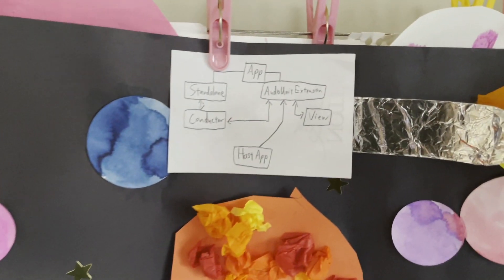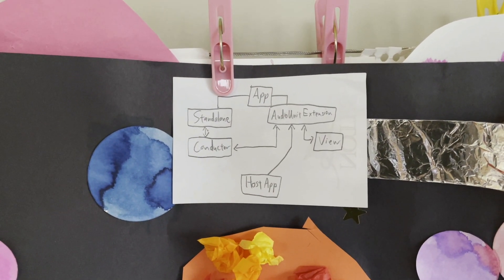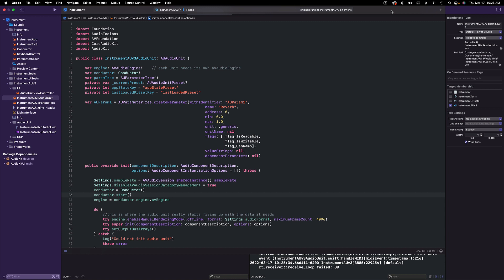This would be a good time for some doodling. We have our application that has our standalone app stuff and our audio unit extension. The extension is passing data to and from the same conductor class as our app, and the audio unit is sending and receiving data from our view controller. Additionally, the host application can access the audio unit's AU parameter tree and presets, which are all linked together in this array of organized chaos.